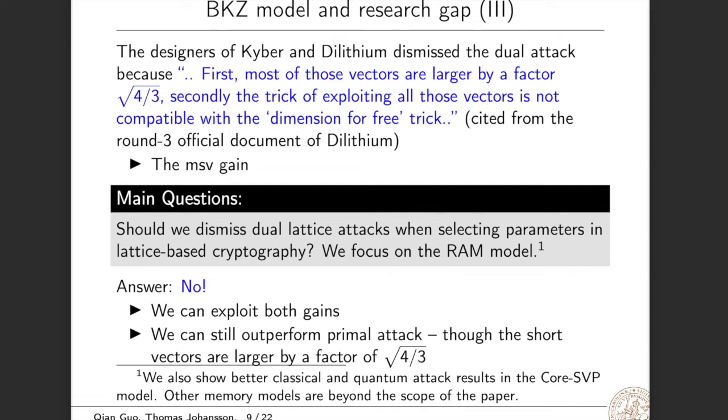Our main research question is: should we dismiss dual lattice attacks when selecting parameters in lattice-based cryptography? Here we focus on the RAM model. Our answer is no. Actually, we can exploit both gains, both the D4F gain and the MSV gain. And we can still outperform primal attacks, even though the short vectors are larger by a factor of sqrt(4/3) compared with the shortest vector. We also show better classical and quantum attack results in the Core SVP model. Please read the paper. Other memory models are beyond the scope of the paper.